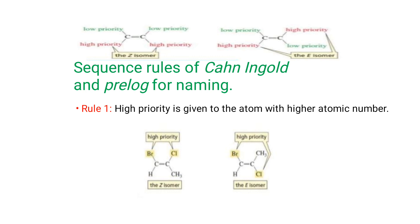Next, the sequence rules of Cahn, Ingold, and Prelog for naming geometrical isomers in the E-Z system. Rule 1: higher priority is given to the atom with a higher atomic number.